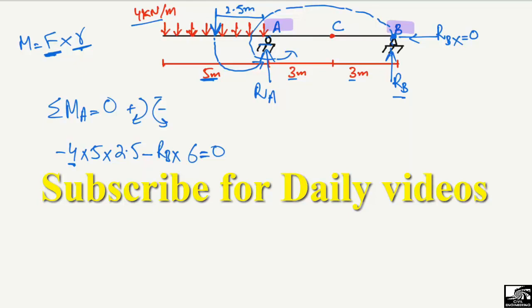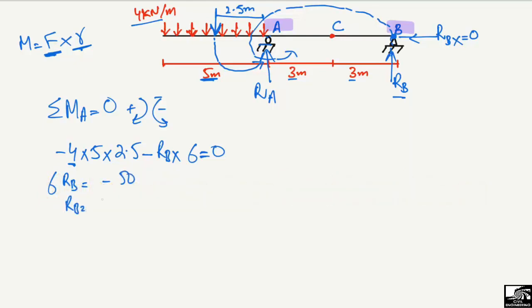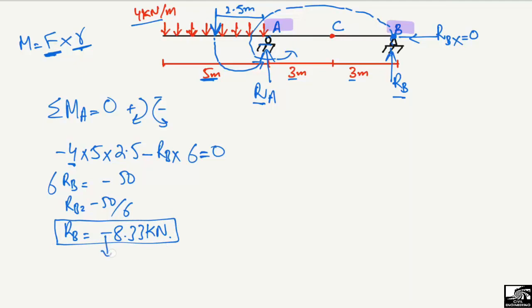Setting the summation of all moments about point A equal to zero and solving: 6·RB = −50, so RB = −8.33 kN. The negative sign means our assumed direction (upward) was wrong. Therefore, RB is actually acting downward, and RB = 8.33 kN downward.